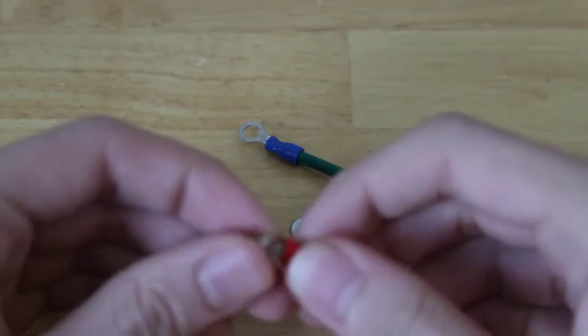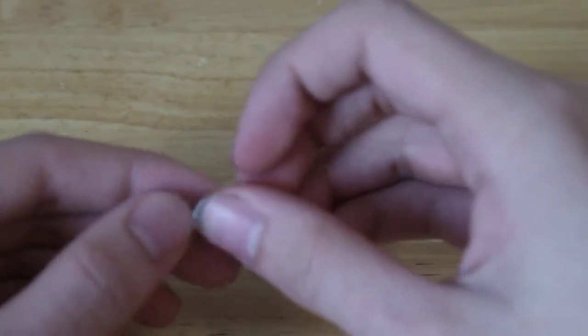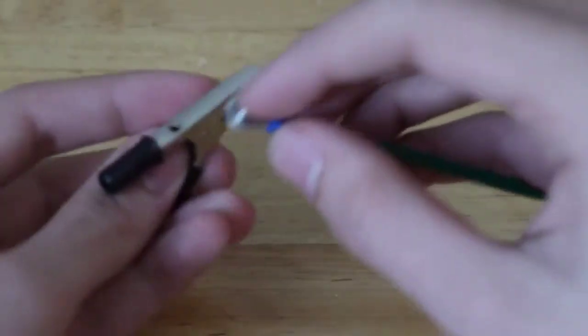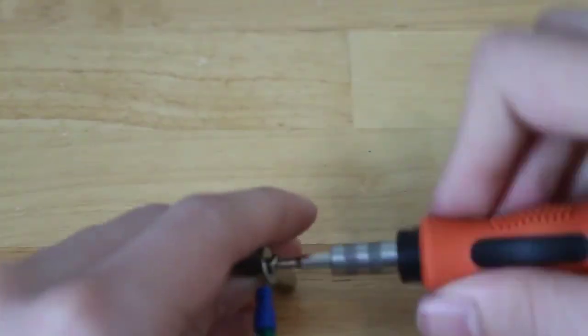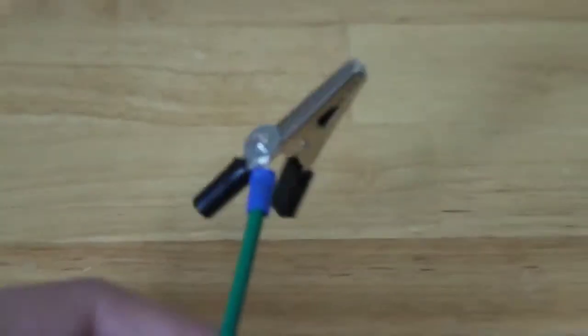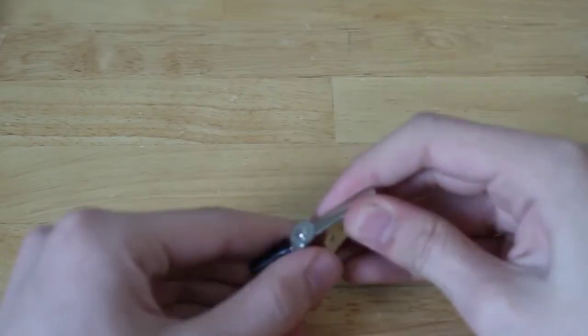But besides that, I'm just going to be using a washer, it should work just as well. So we're just going to put a washer through and screw the entire thing on to the alligator clip. And there we have that, like that. All we have to do now is make five more.